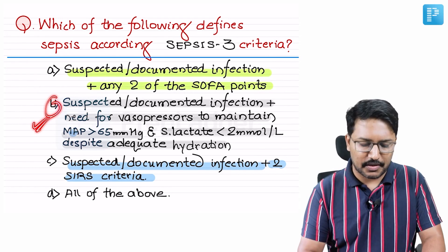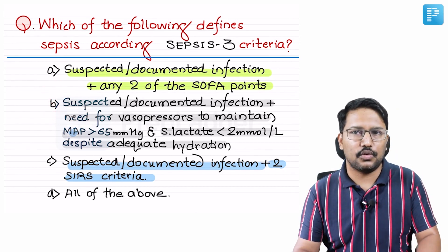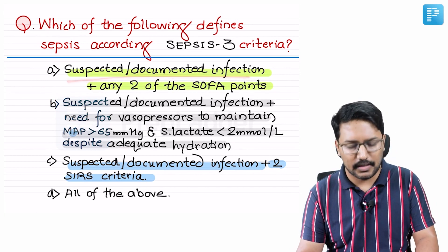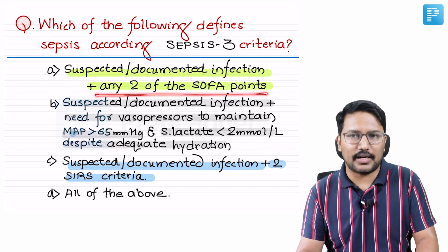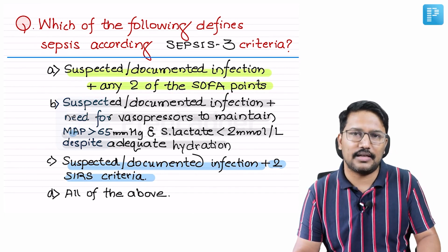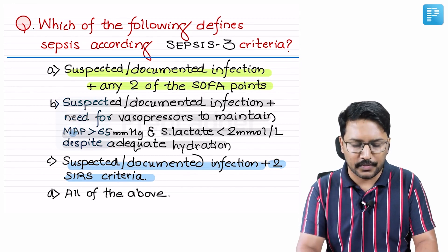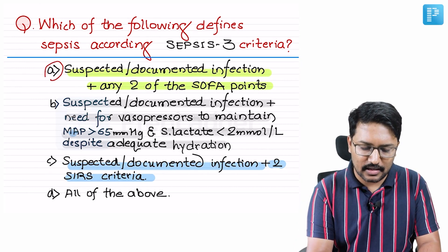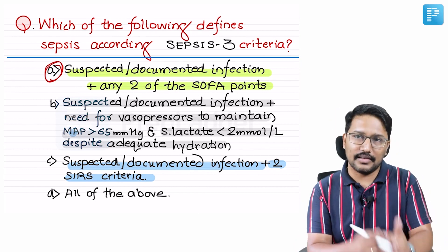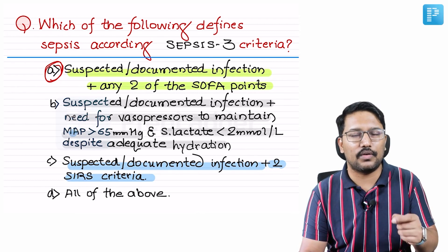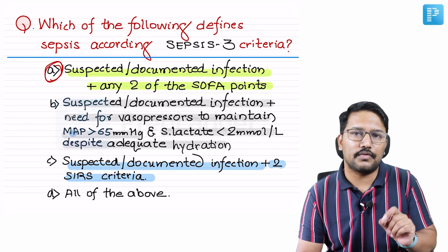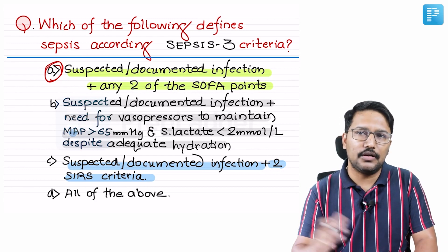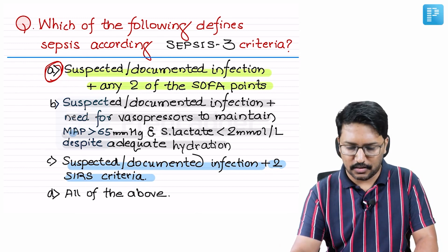Option B describes septic shock. Option A — suspected or documented infection plus any two SOFA points — at least for someone with no comorbidities and a baseline SOFA score of zero, Option A does define sepsis. So the correct answer from these options is Option A. If there had been an option explicitly stating acute rise in SOFA score by more than or equal to two points in a patient with suspected or documented infection, that would have been the ideal answer.